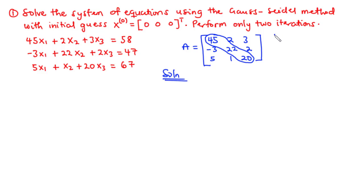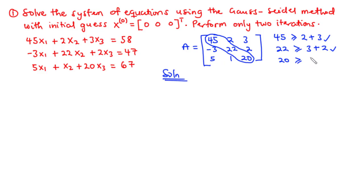For the first row, the absolute value of the diagonal element is 45, and 45 ≥ |2| + |3| = 5. This is correct. For the second row, the diagonal element is 22, and 22 ≥ |-3| + |2| = 5. This is also true. For the third row, the diagonal element is 20, and 20 ≥ |5| + |1| = 6. This is also true. Hence, this matrix is a diagonally dominant one, and so this system is diagonally dominant, giving assurance that the approximations are going to converge to the exact solution.